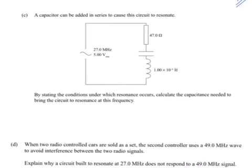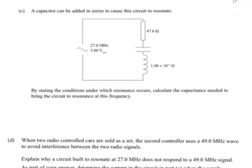Moving on. C, a capacitor can be added in series to cause the circuit to resonate. So there's a resonance circuit. That's nice. We're stating the conditions under which resonance occurs. Calculate, so there's parts of this being given already. We've got to state conditions under which resonance occurs, and then calculate the capacitance needed to bring the circuit to resonance at this frequency. Okay, so the conditions under which resonance occurs is when the reactance of the capacitor is equal to the reactance of the inductor.